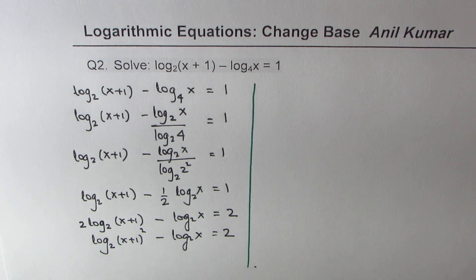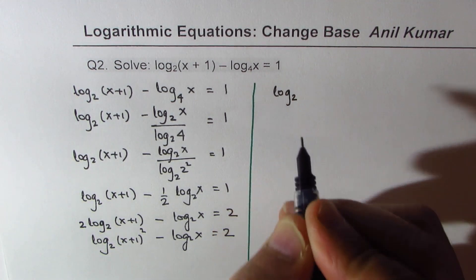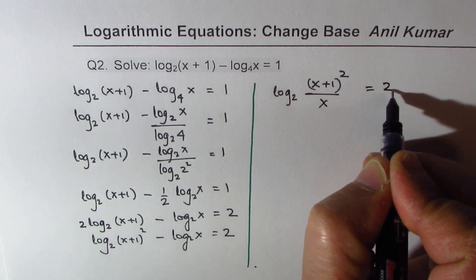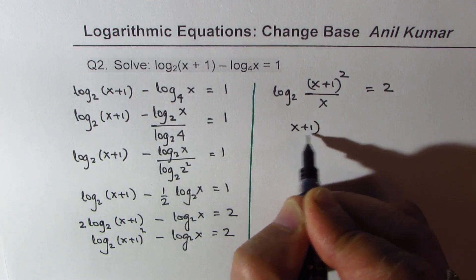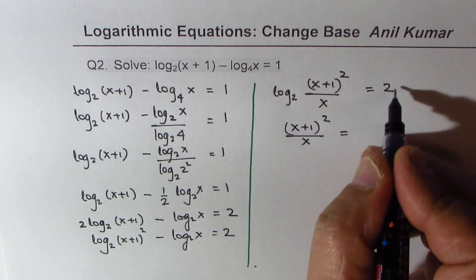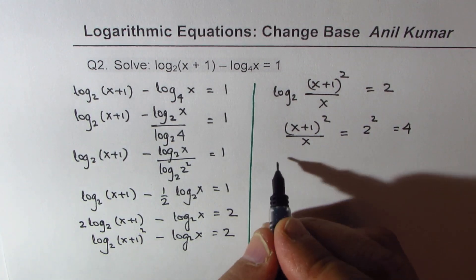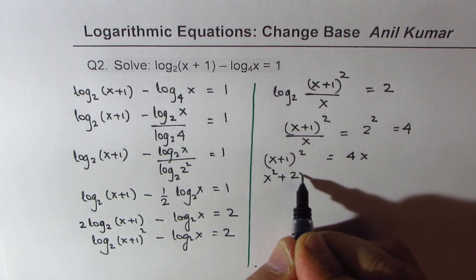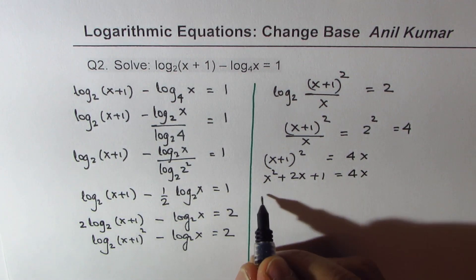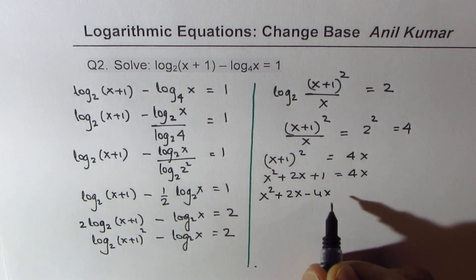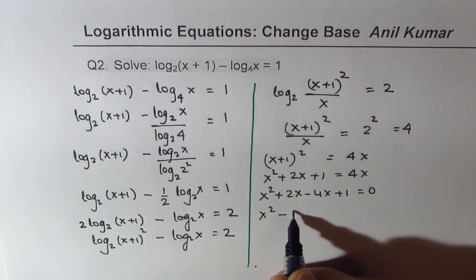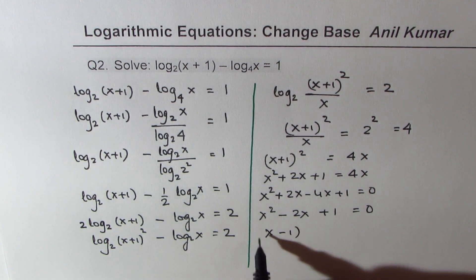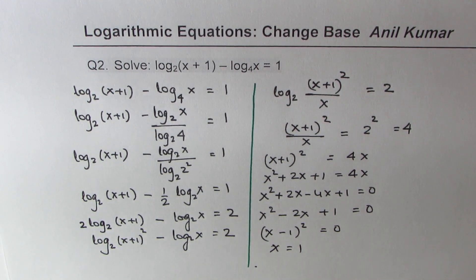Now combine the log terms: log base two of (x plus one) squared over x equals two. Writing in exponential form: (x plus one) squared over x equals two squared, which is four. Cross multiplying: (x plus one) squared equals four x. Expanding: x squared plus two x plus one equals four x. Bringing terms together: x squared minus two x plus one equals zero.